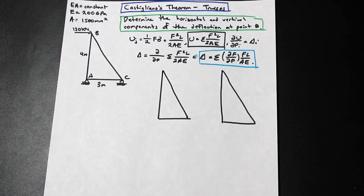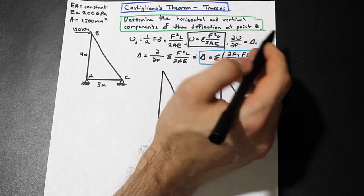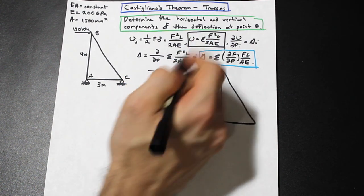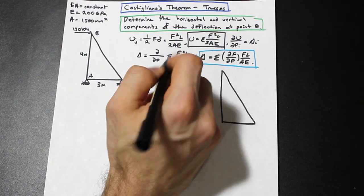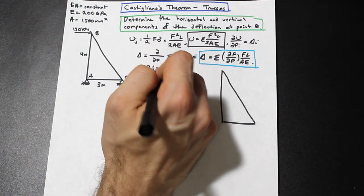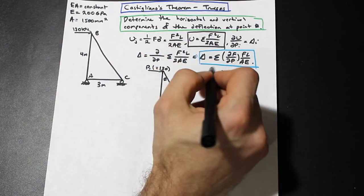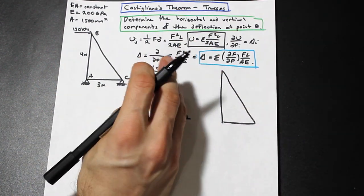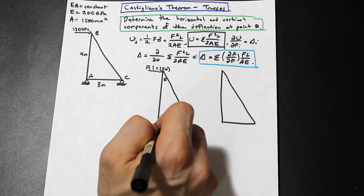The first step in Castigliano's Second Theorem is to apply our load P in the direction of action so that when we take the partial derivative, that's the deflection we're getting. We apply load P1 horizontally at B for the horizontal deflection. If there is a force there — in brackets equal to 120 — we draw that in; if there's no force we set it to zero at the end. We remove all other loadings.